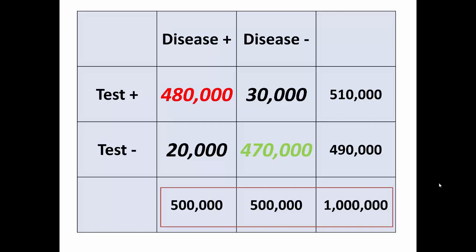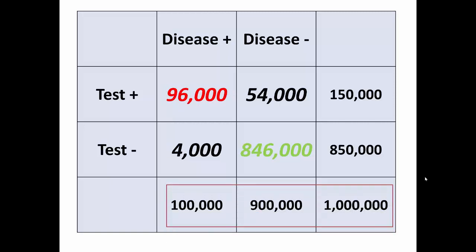But what happens when the prevalence rate drops from 50% to 10%? So now only one out of 10 people have the disease in question. As you can see in the upper right-hand corner, there are now a lot more false positives. The test accuracy didn't change — sensitivity and specificity are the same. Because the ratio between the two columns has shifted, there are simply a lot more people in the upper right-hand corner; it's just a function of the math. The positive predictive value is 64%, or 0.64, meaning only 64% of positive results are true positives.